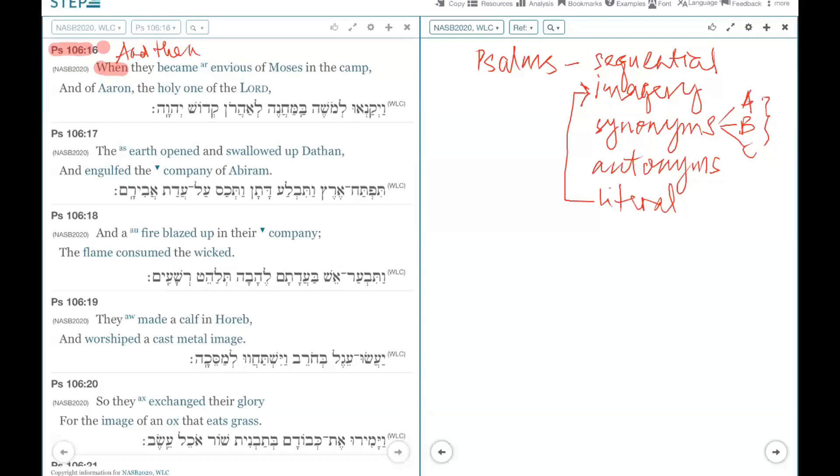When we come to verse 16, we are now told they, the Israelites, became envious of Moses in the camp, and of Aaron, the Holy One of God. This particular picture is in Numbers 16.